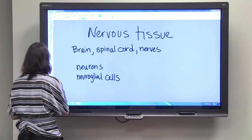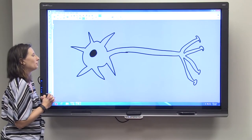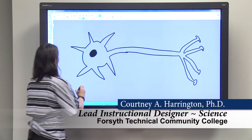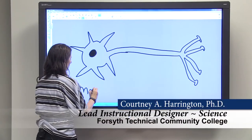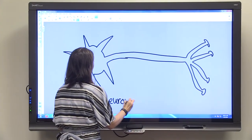So we're going to take a look at what a neuron looks like. This is a motor neuron, and we're going to talk about the parts of a motor neuron that you need to know.